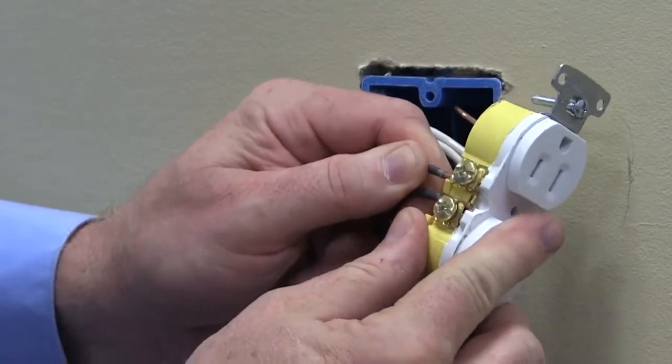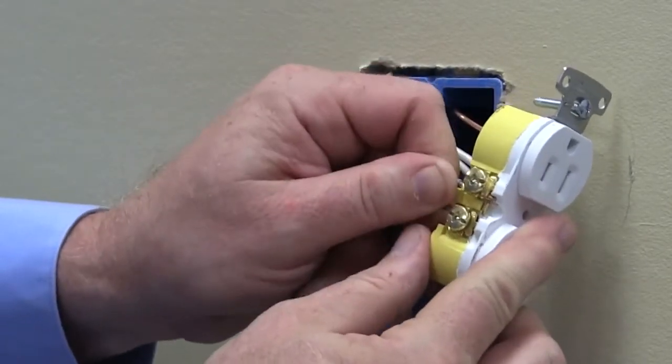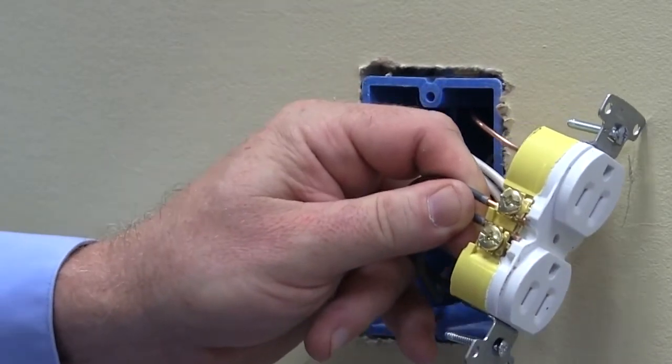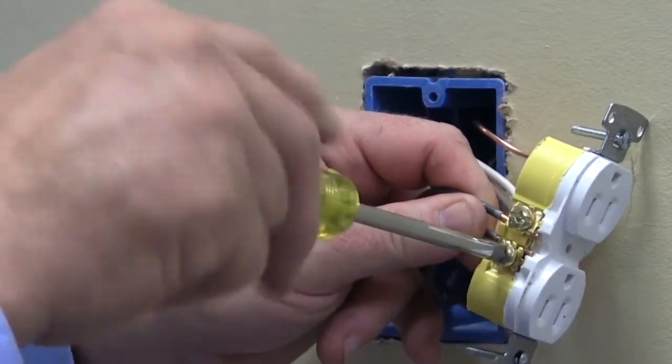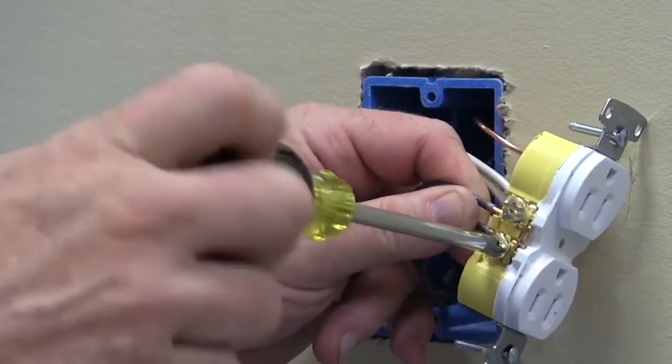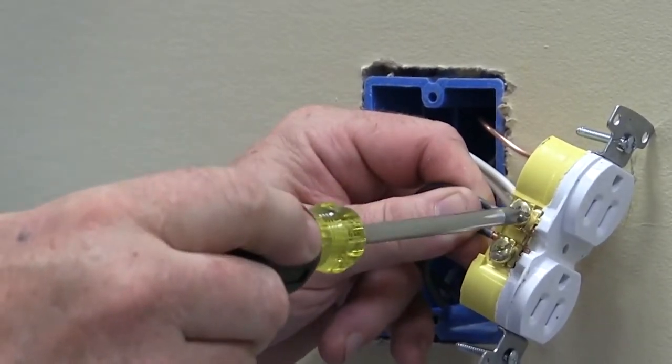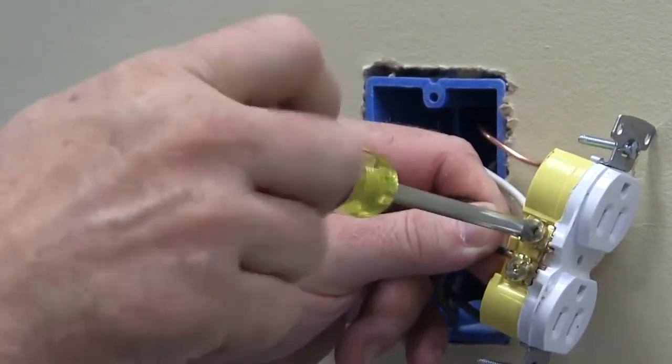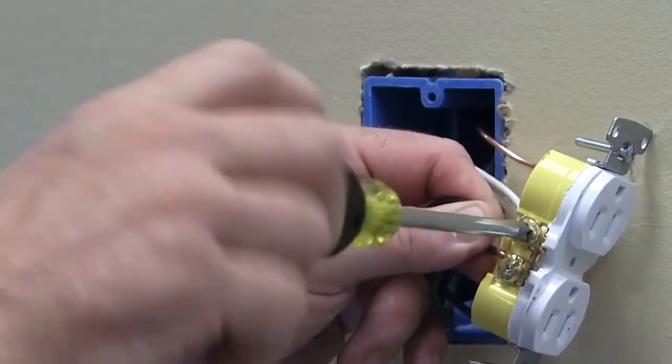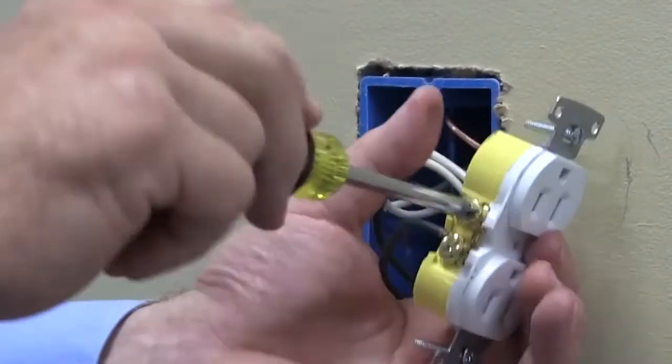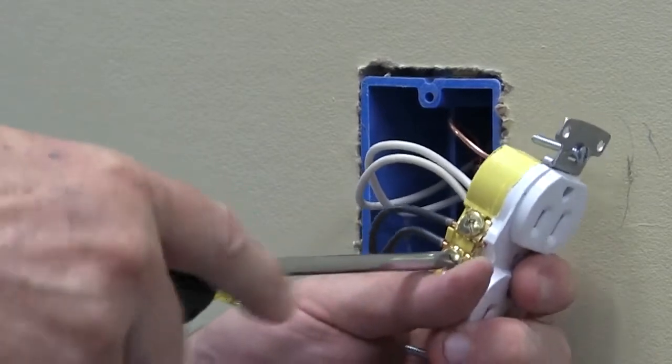Now, take your black wire and follow the same steps but on the brass side. Once positioned and connected, screw down clockwise to terminate the wires. Notice how when you push the wire, the tip comes through the installation area showing it is fully engaged.